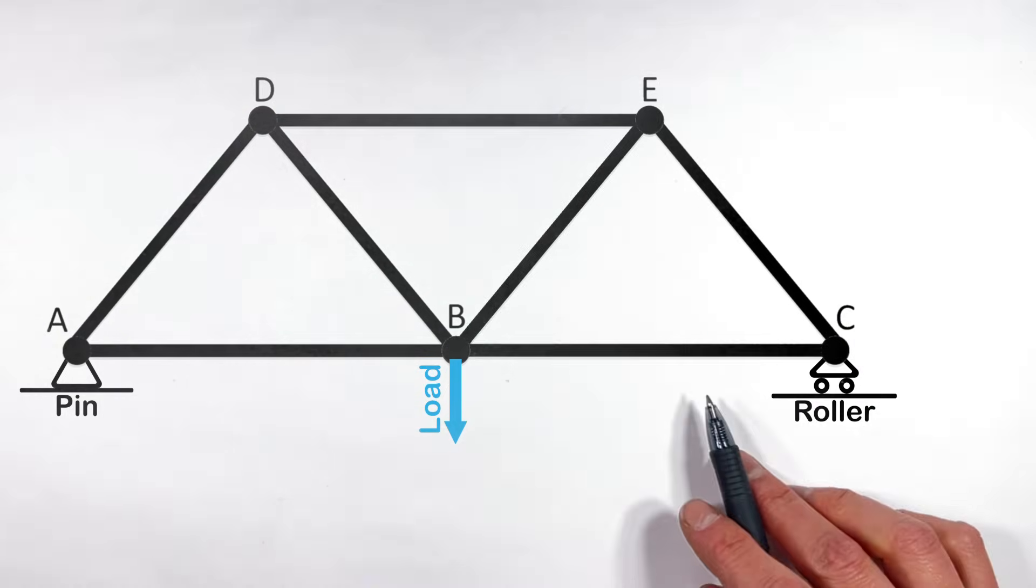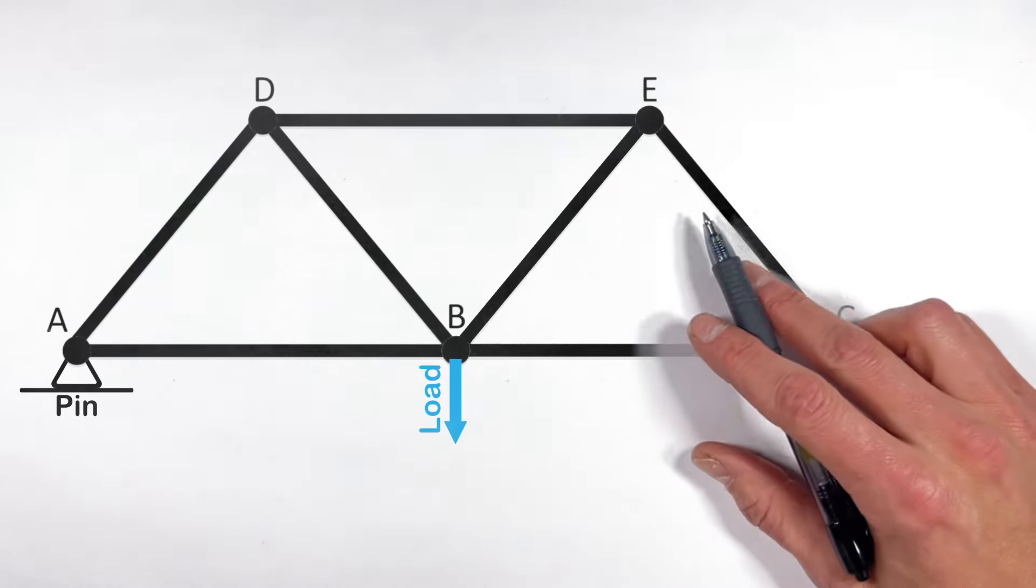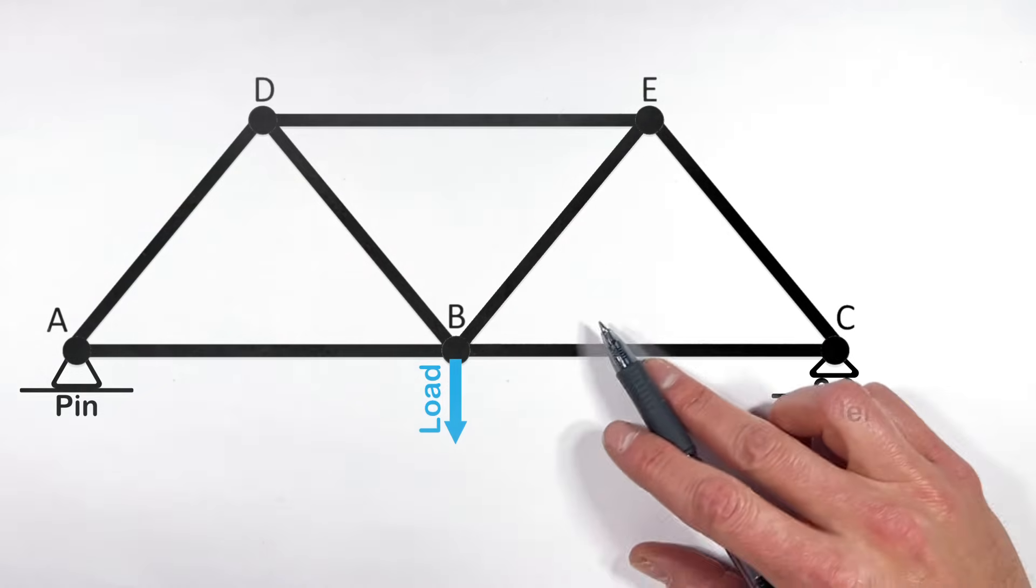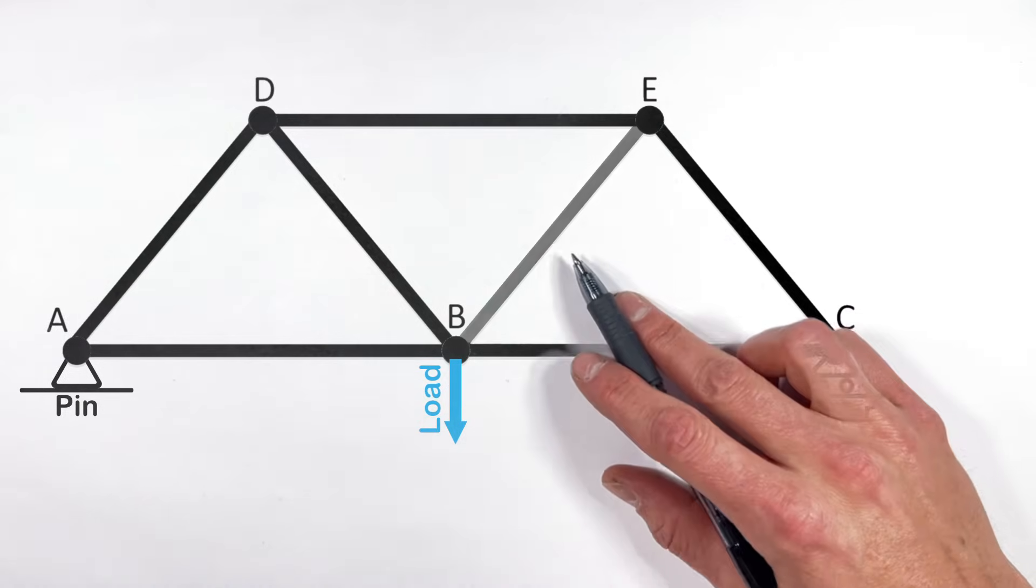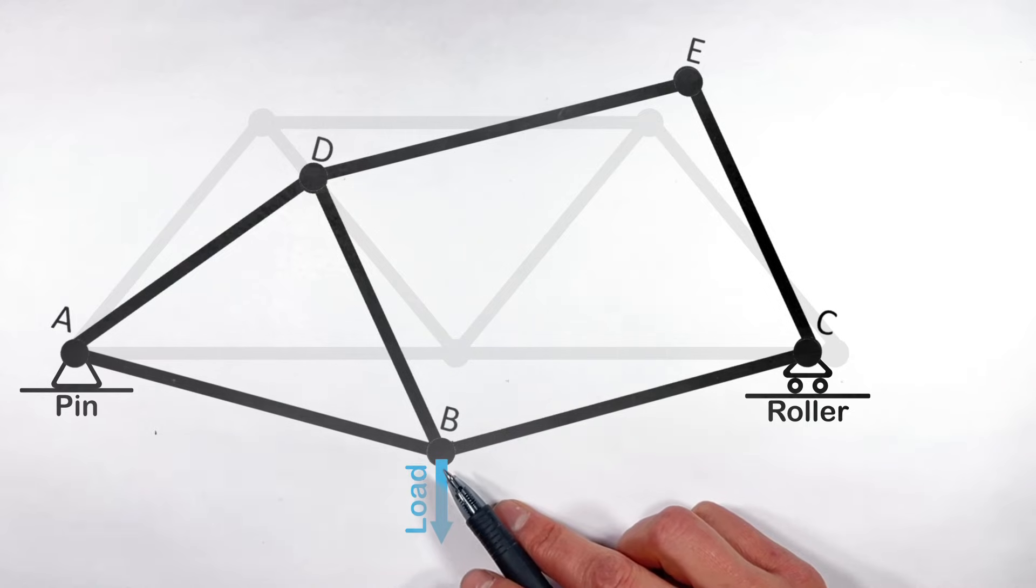Now the last one, and this is the one that I think is most complicated for a lot of people, is this member right here that runs from B to E. You see, if we were to remove this beam right here, this left side of the truss is going to collapse.